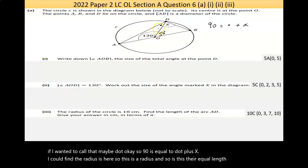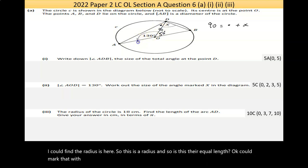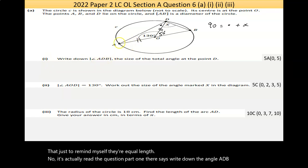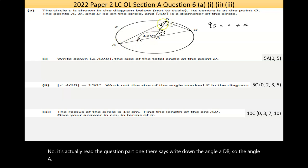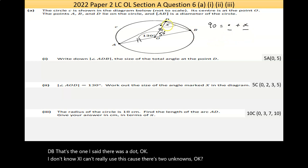I could make a statement that 90 equals dot plus x. The radius is here, and so is this, so they're equal length. I can mark that to remind myself they're equal length. Let's read the question: part one says write down the angle ADB.